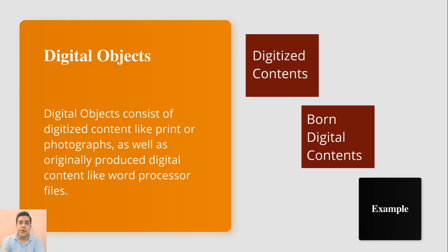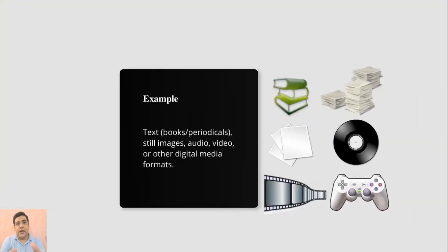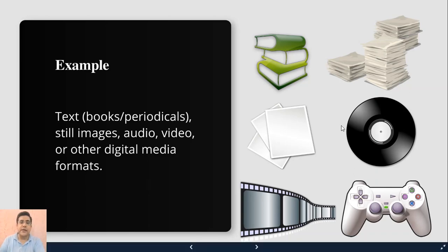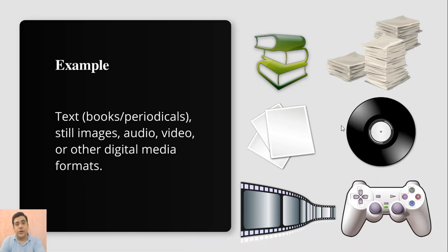Born digital content is originally produced content like word processor files, MP3 audio, MP4 video, or whatever. Examples include: in text we cover books and articles; we have still images; we have collections of audio in MP3 or other formats; collections of video in MP4 or other formats; and collections of games and other digital media formats. Digital media format is actually very important in digital objects — we are talking about digital media formats, not analog formats.